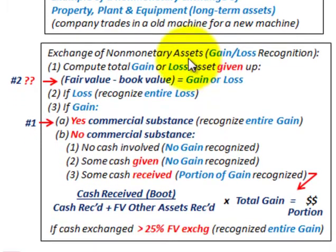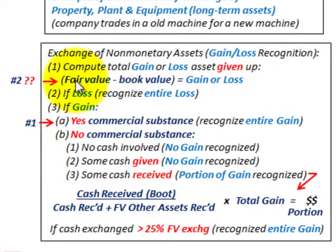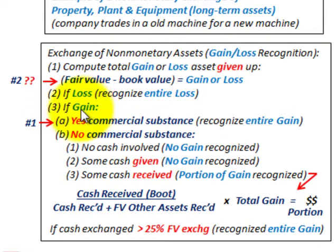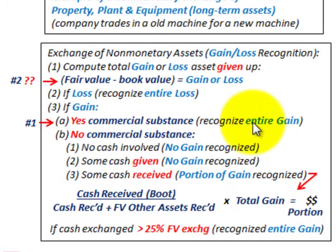When we're doing these non-monetary exchanges, we have some specific rules to follow. The first thing we have to do is compute any total gain or loss on the asset given up — that's taking the fair value of the asset minus its book value to determine if we have a gain or loss. We're also going to be looking at whether it has commercial substance, meaning the future cash flows are affected by this transaction. If so, we recognize the entire gain.